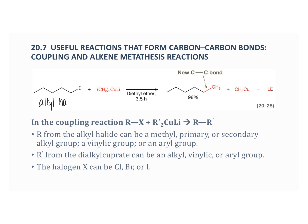In this reaction, two alkyl groups are joined together — one from the alkyl halide and the other from the dialkyl cuprate. That's called a coupling reaction. Let's look at the two things that are coupled together: the five carbons from the alkyl halide shown in black, and the CH₃ group shown in red from the cuprate.